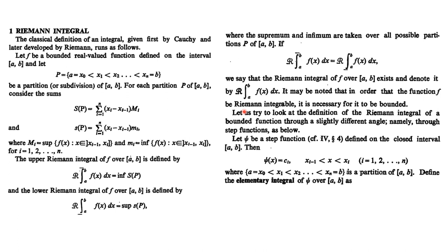The necessary condition for Riemann integrability is that the function should be bounded and defined over the interval [a,b]. We can also define the Riemann integral in terms of step functions. Recall that a step function is one defined on a closed interval [a,b] with a partition, over each sub-partition of which the function attains a constant value.